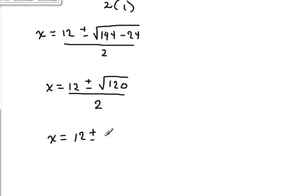So we're going to write x equals 12 plus or minus the square root of 4. 4 goes into 120, 30 times. So we're going to split up the radical like so over 2.